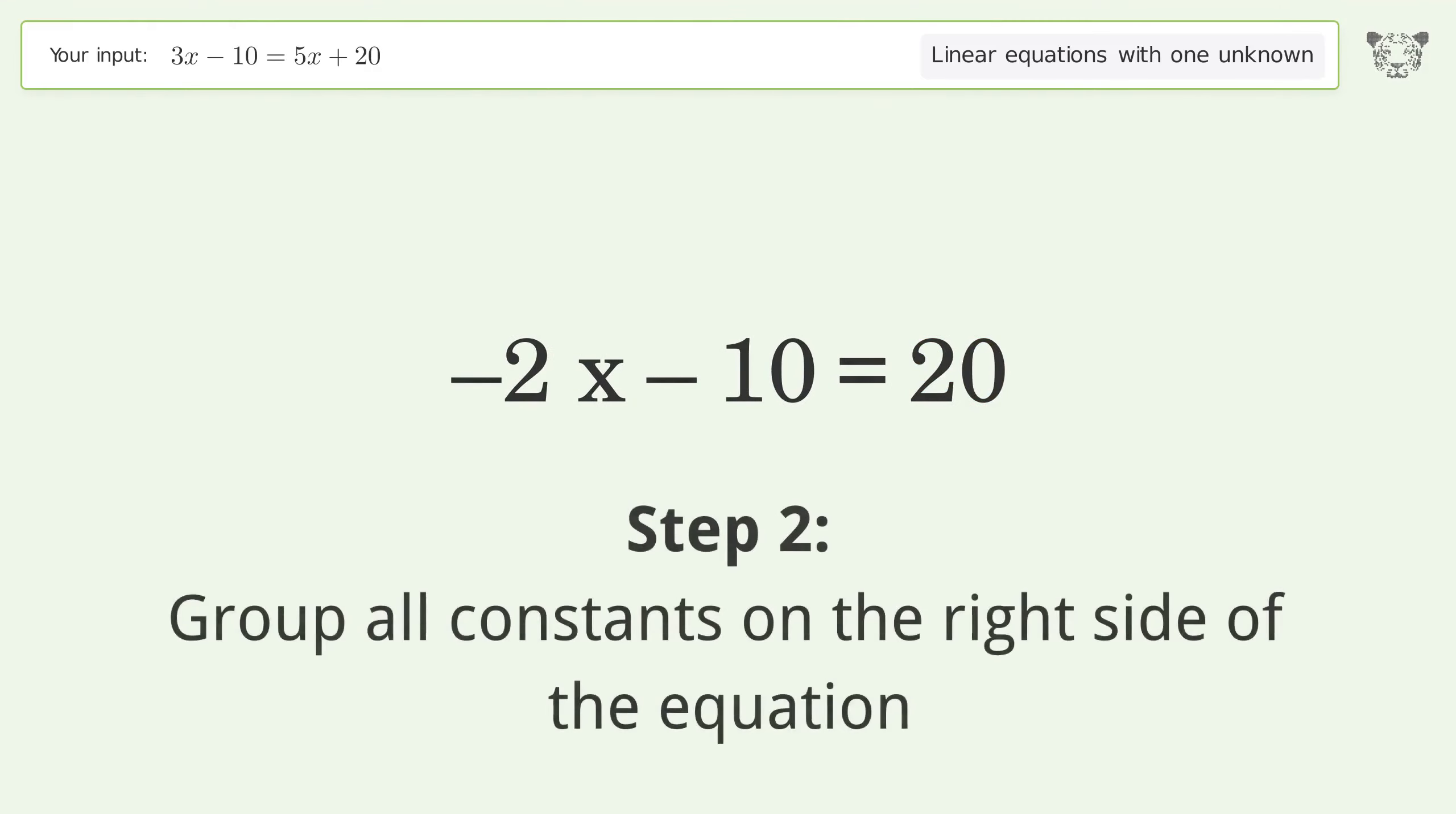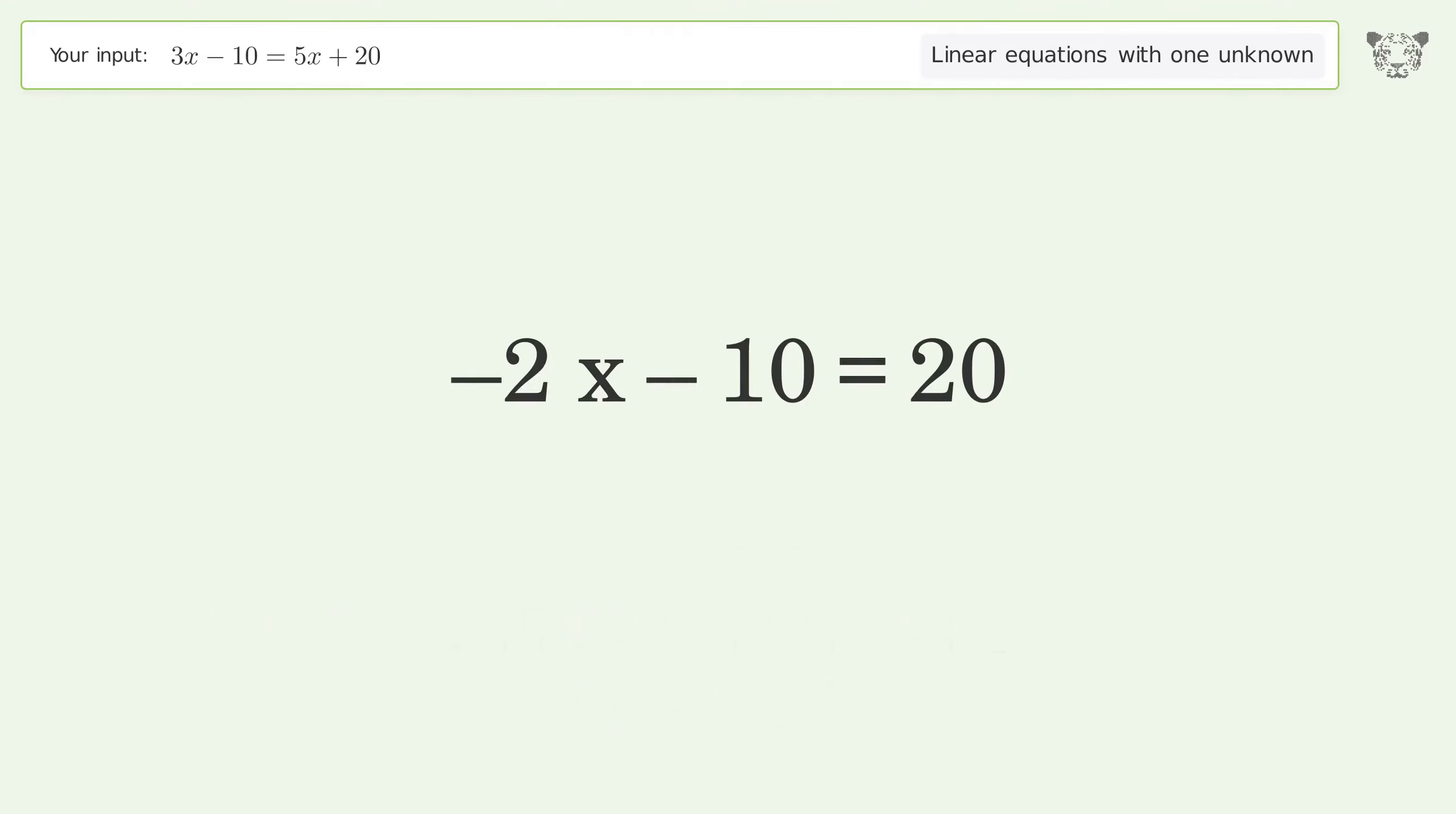Group all constants on the right side of the equation. Add 10 to both sides. Simplify the arithmetic.